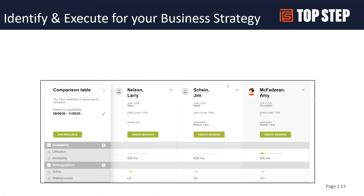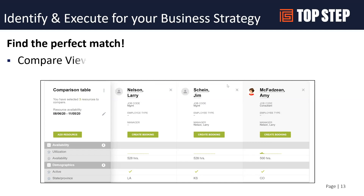Entity tags are another benefit if you're using them and want to include them in your search. There's also a cool compare view feature — let's say you have three candidates that are all good fits and you want to compare them to each other to find the best option. From here you can add or remove candidates, enter the availability window you're looking for, and compare their profiles side by side: what skill sets they have, what availability they have, and any other elements you're tracking at the user level.